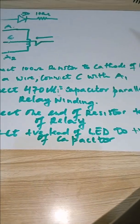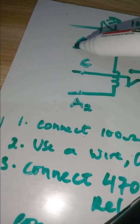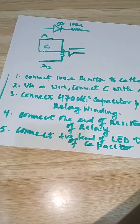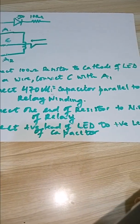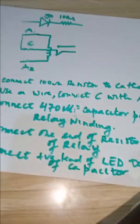Then use a wire to connect 4NTC to A, meaning the common terminal of the relay will be connected to A, just like that. Then the third step will be connecting the 470uF capacitor to the relay winding, just like this.